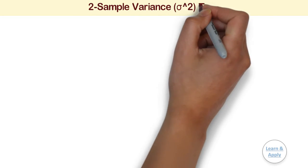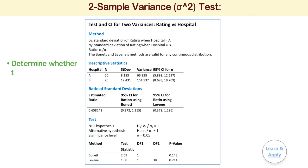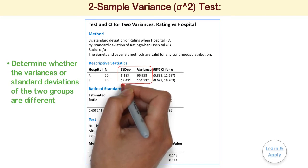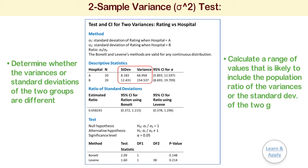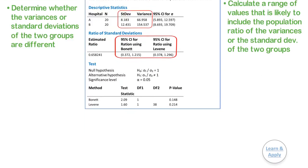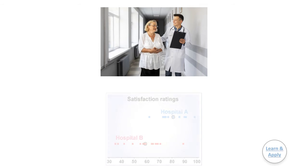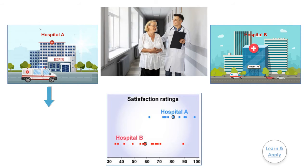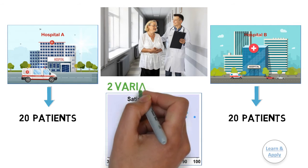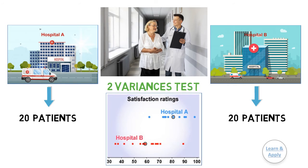Two-sample variance test. Use the two-sample variance test to determine whether the variances or standard deviations of two groups are different, and to calculate a range of values that is likely to include the population ratio of the variances or standard deviations of the two groups. For example, a healthcare consultant wants to compare the patient satisfaction ratings of two hospitals. The consultant collects ratings from 20 patients for each hospital, then performs a two-variance test to determine whether the standard deviations in patient ratings from the two hospitals are different.